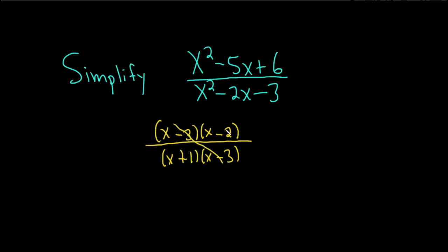provided x is not equal to 3. This whole thing doesn't make sense if x is 3 because you would get 0 over 0. So x cannot equal 3. Now this equals x minus 2 over x plus 1. That would be the final result.